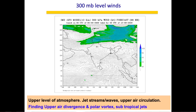If upper air divergence at 300 mb is observed, that usually means there is convergence at the lower levels with high precipitation possible. Upper air convergence at 300 mb means low pressure at the upper level, high pressure below, and a sunny day at the surface. For example, if there is an anticyclone at 850 mb, then 300 mb will show a cyclonic circulation — good for very hot and sunny surface weather.